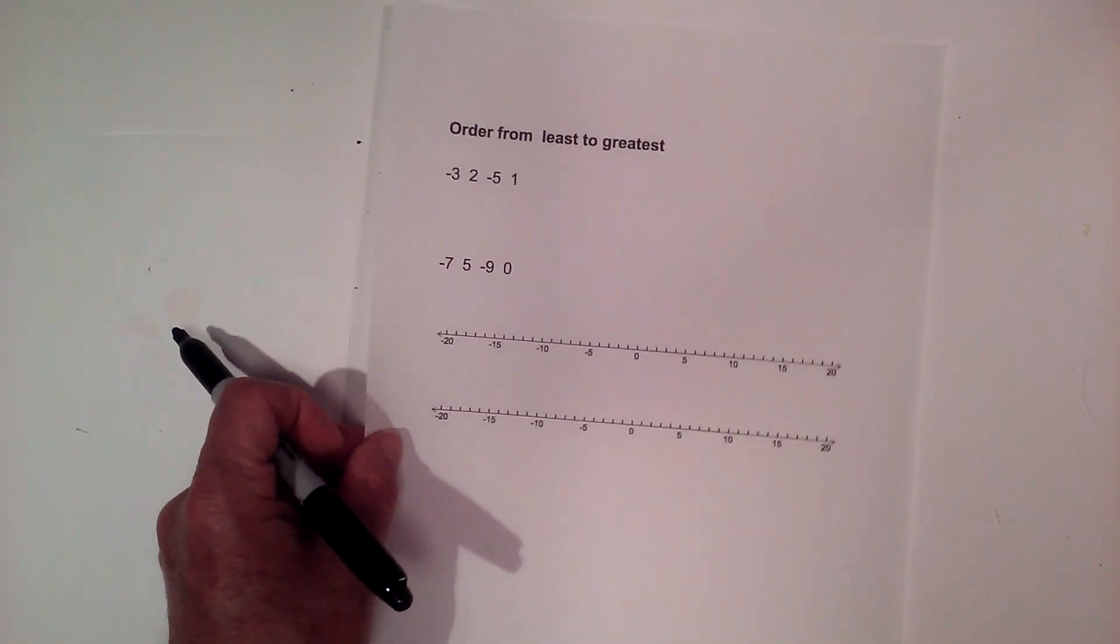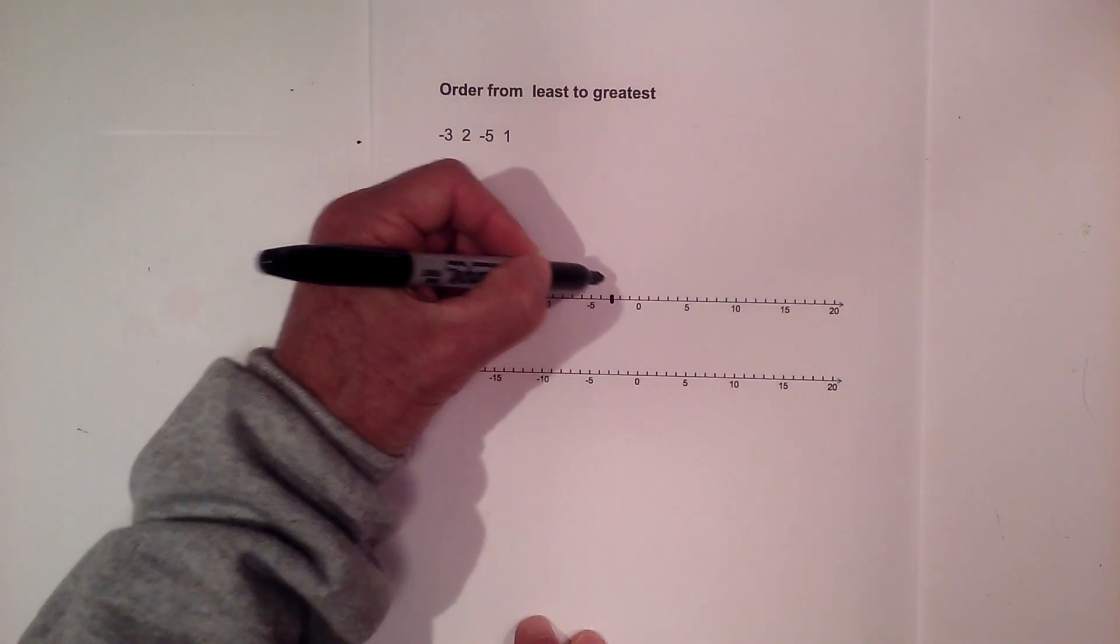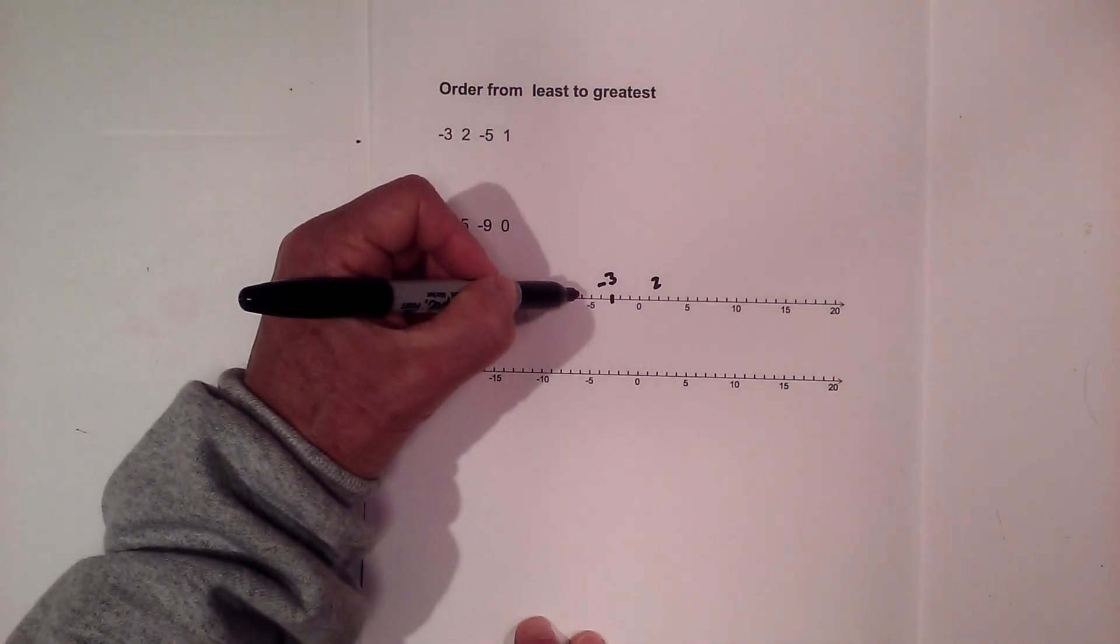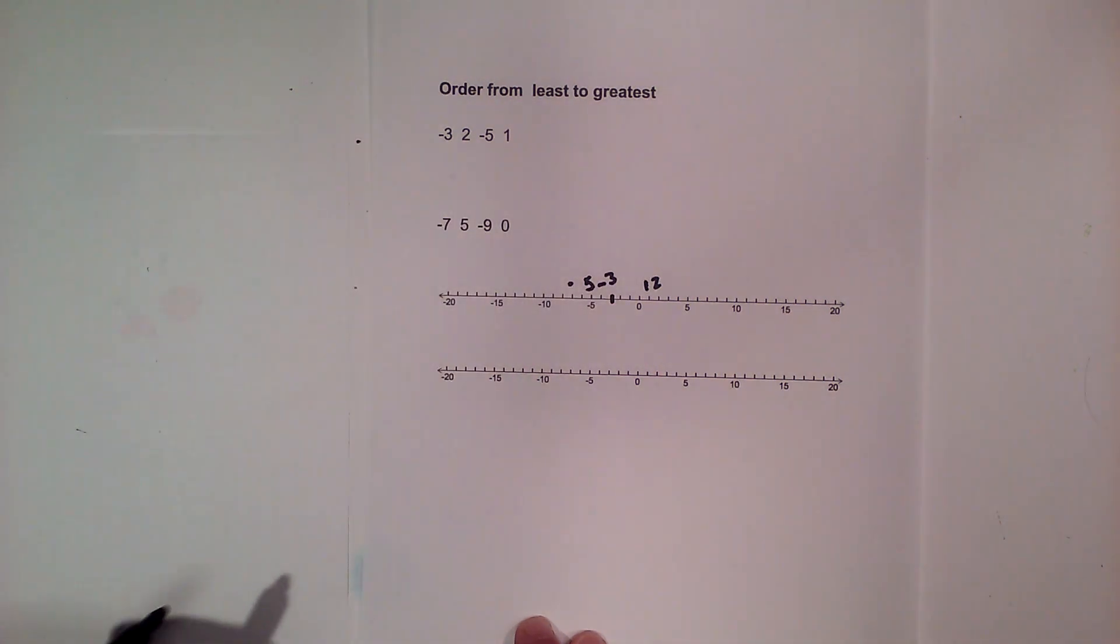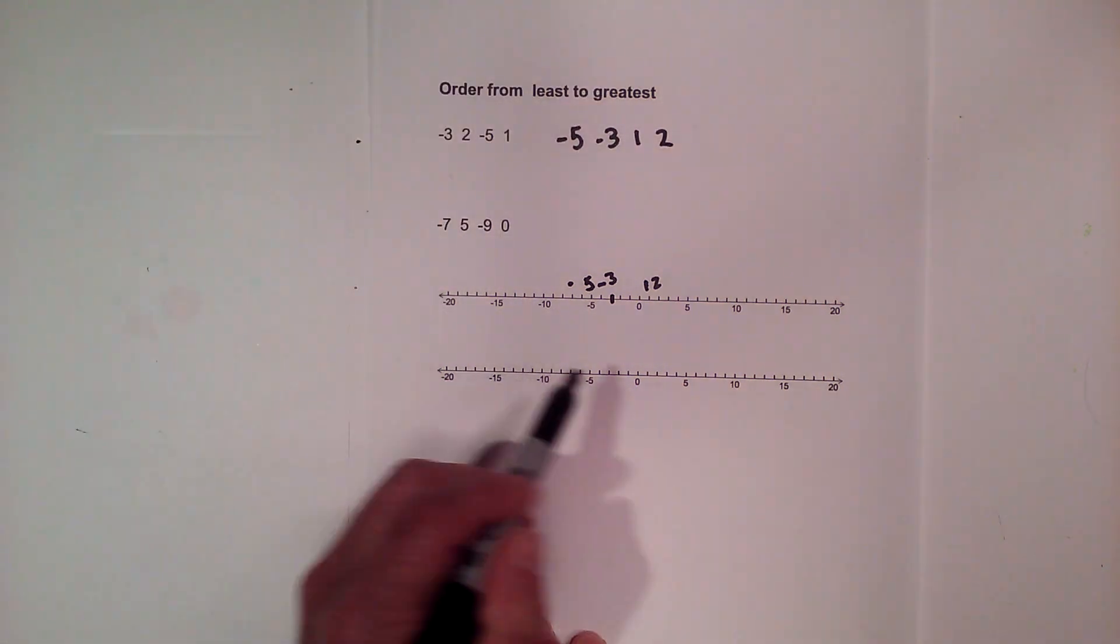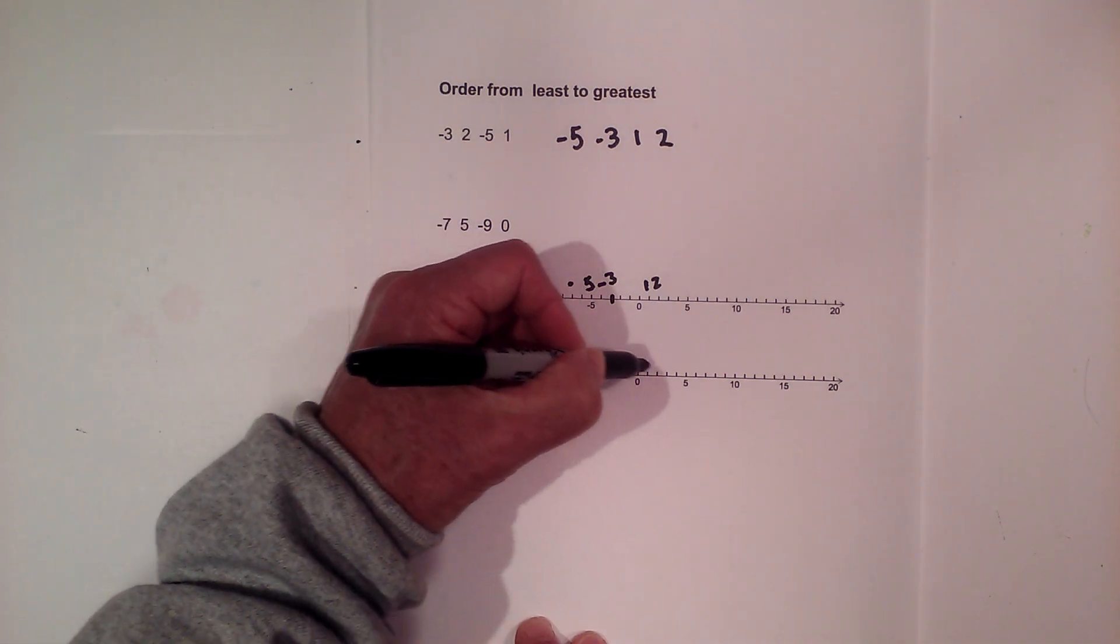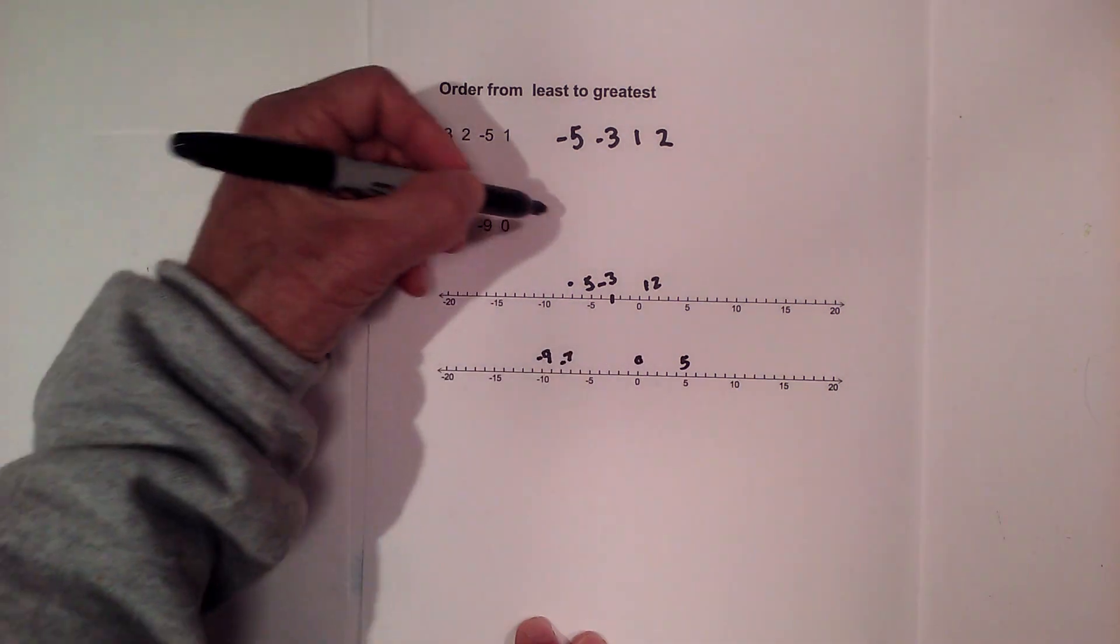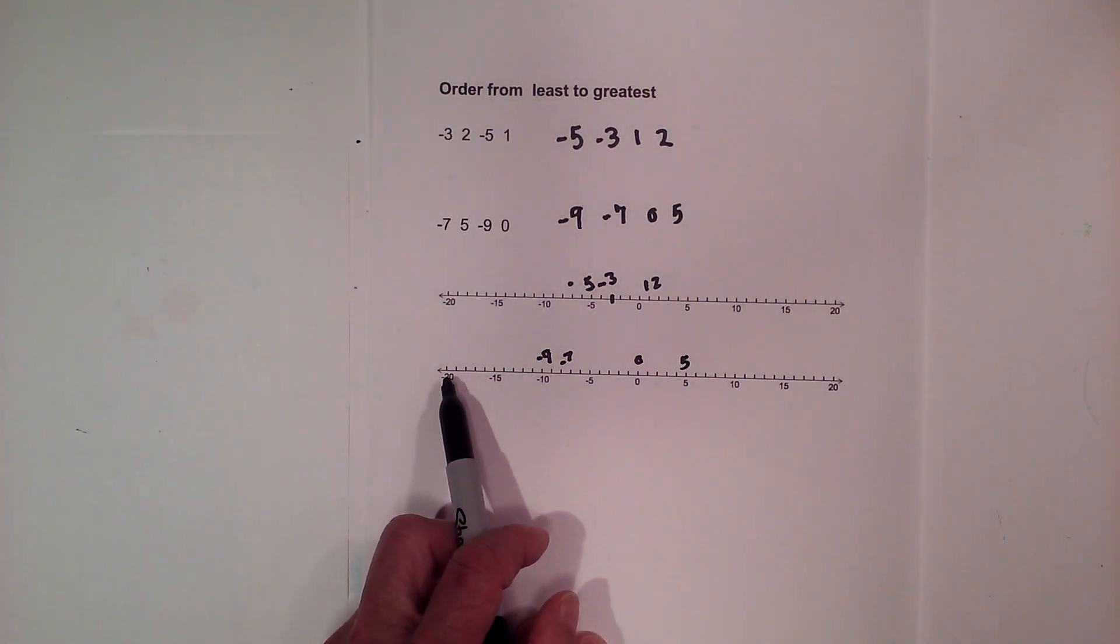Last but not least, let's order these from least to greatest, and I'm going to put them on the number line. We have negative 3. We have 2. Negative 3 is here. 2 is here. We have negative 5 is here, right here, and then we have 1, which is right there. So, from least to greatest, there's our order. We have negative 5, negative 3, 1, 2. Again, because everything to the left is smaller than the numbers to the right.